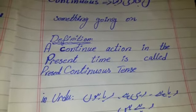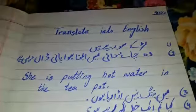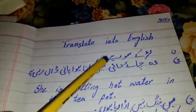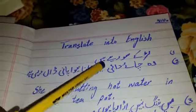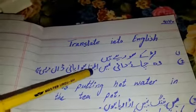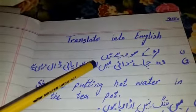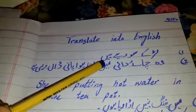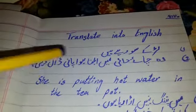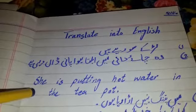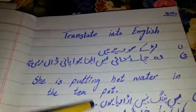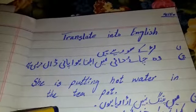Now it's time to solve the translation. Students, it's up to you to solve the translation in your notebooks. 'Ladke so rahe hain' — solve this yourself; I will not tell you this one. Because I have already told you about the definition, formation, and examples of these kinds of sentences. 'So rahe hain' — this is present continuous. 'Woh chai daani mein ubalte hue paani daal rahi hai' — this one is difficult, so I'll make the sentence: She is putting hot water in the teapot.